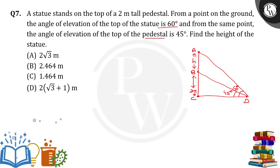So the pedestal as well as the statue stands vertically on the ground. Now here we can see there are totally 2 triangles. What are they? In triangle BCD, first triangle in triangle BCD, angle BCD is equal to 90 degrees.